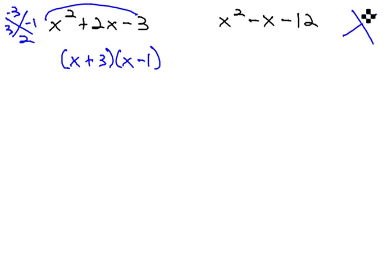And on the other one, we're multiplying to negative 12, adding to negative 1. It would be negative 4 and 3, so it's x minus 4 times x plus 3. Again, these shortcuts only work because there's a 1 in front of x squared.